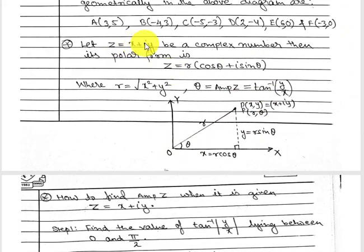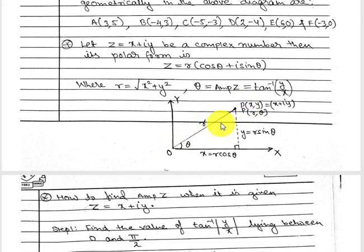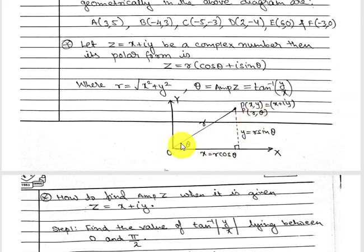Suppose I have x + iy. In the complex plane, this complex number can be denoted by the point P(x, y). If I join this point P with the origin, the length of OP is your r. Since this point is (x, y), from O to the foot is x and from the foot to P is y. The angle XOP is called θ, which is your amplitude.